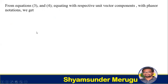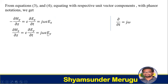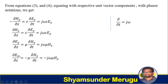From equations 3 and 4, equating the respective unit vector components, we get: minus partial Hy over partial z equals epsilon times partial Ex over partial t equals j omega epsilon Ex; partial Hx over partial z equals epsilon times partial Ey over partial t equals j omega epsilon Ey; partial Ey over partial z equals mu times partial Hx over partial t equals j omega mu Hx; and partial Ex over partial z equals minus mu times partial Hy over partial t equals minus j omega mu Hy. We consider these as equation 5.